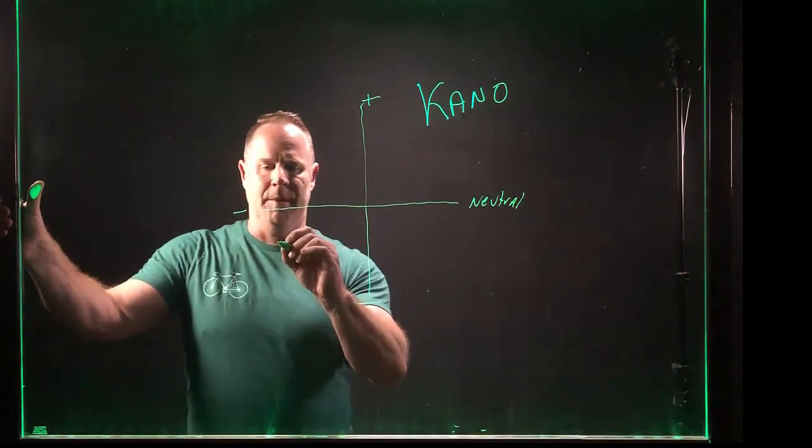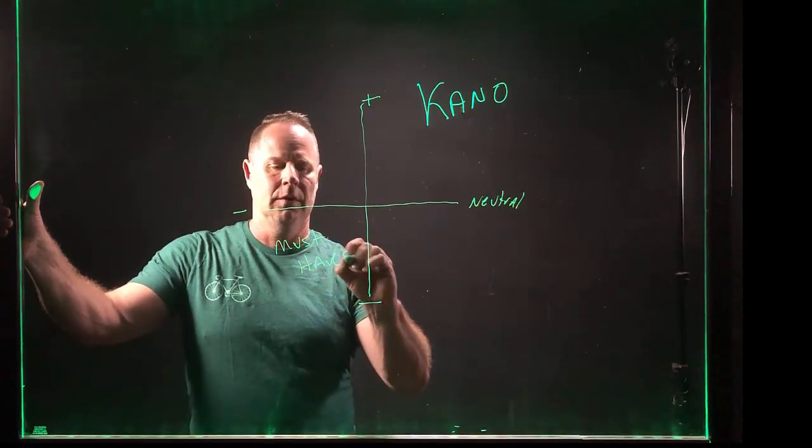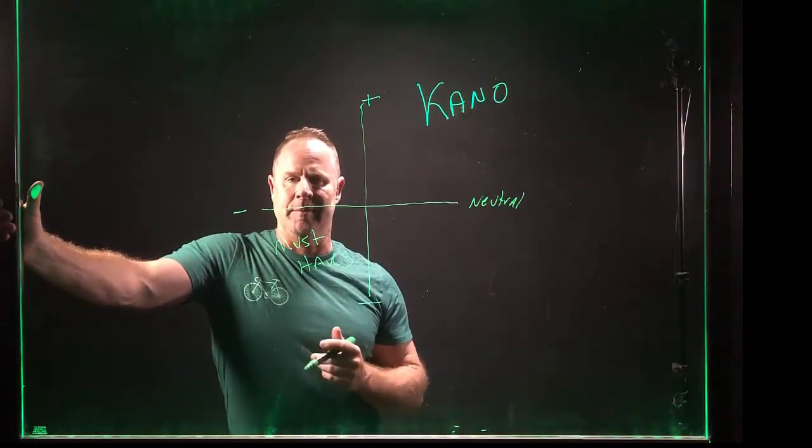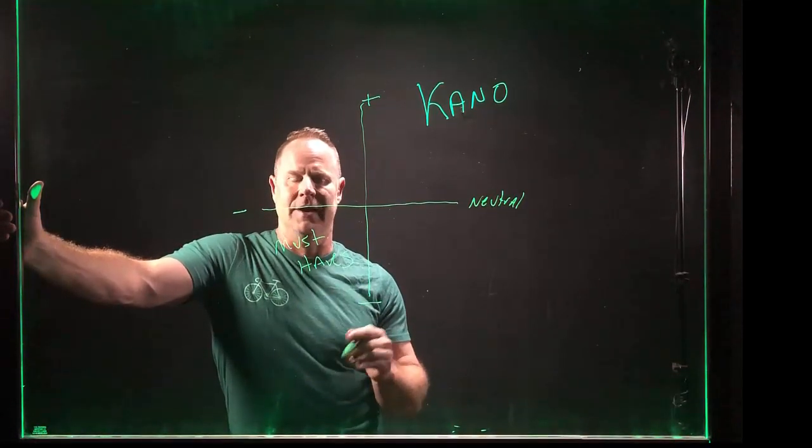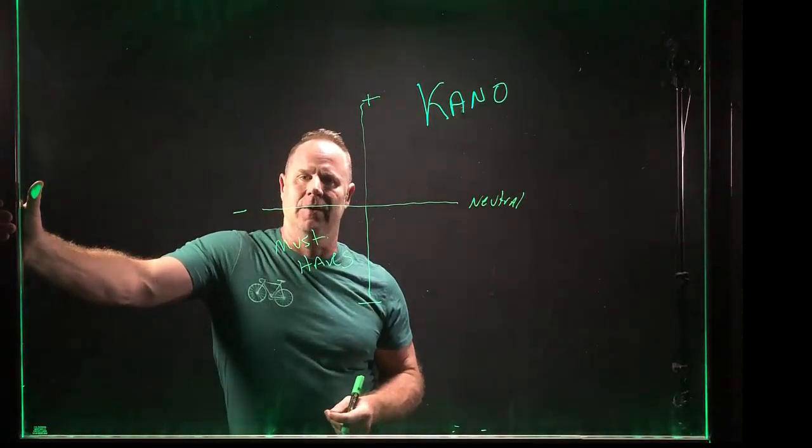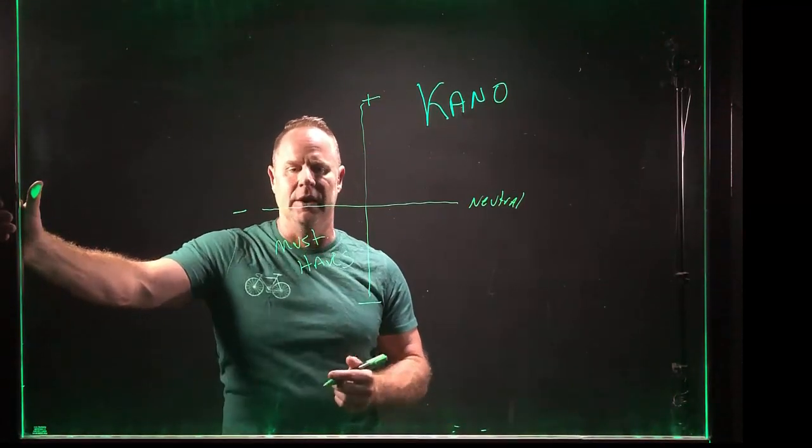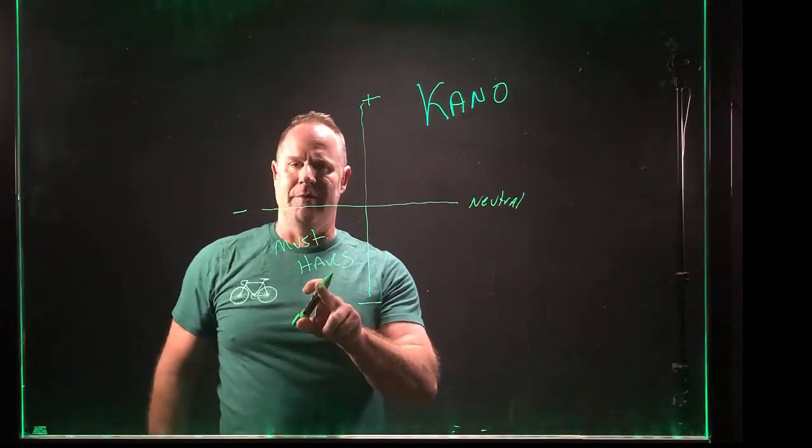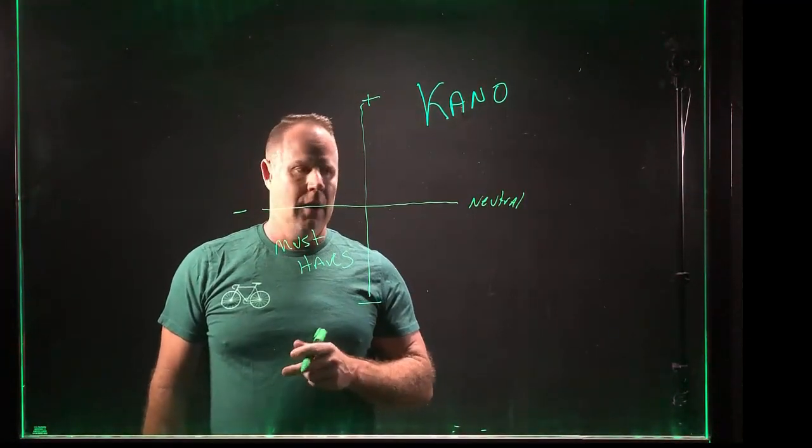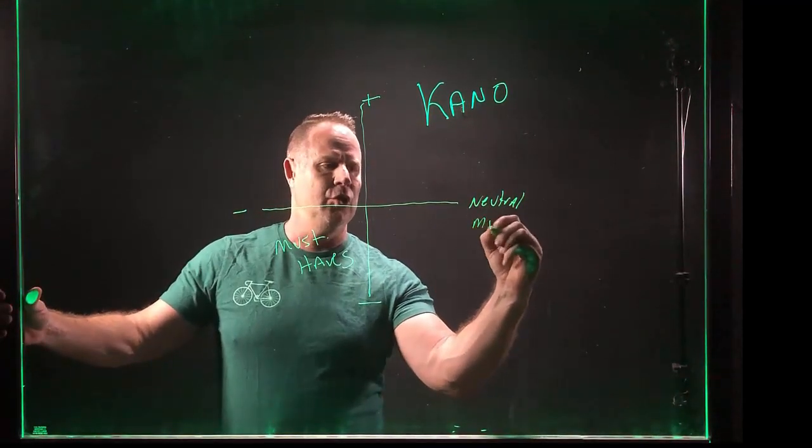So Kano broke customer needs down into several categories. So one, I'm going to put it here, are what we call must-haves. Must-haves have to be in the design. A clean room for me is a must-have. A coffee pot in the room is a must-have. So what Kano said is failing to provide a must-have leads to customer dissatisfaction. Providing a must-have simply makes the customer neutral.